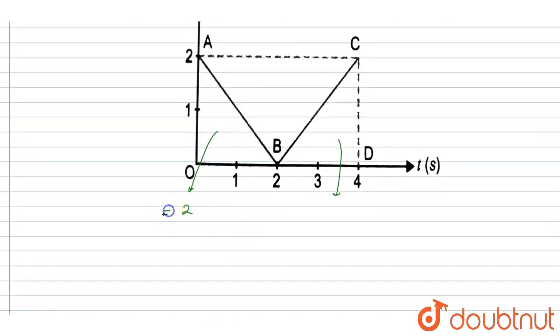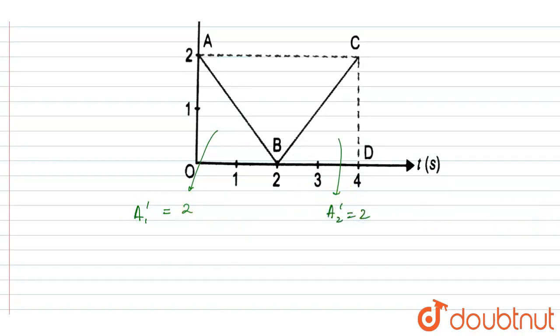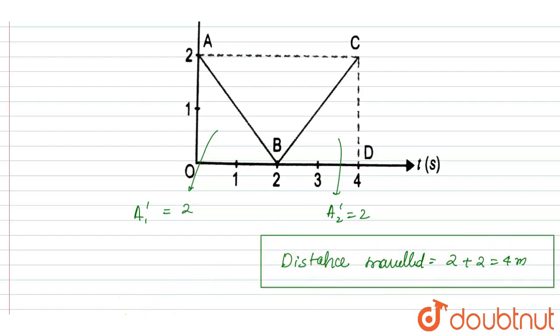So if I write down the distance traveled, it is 2 plus 2, it is 4. So displacement is zero and distance traveled is 4. Thank you.